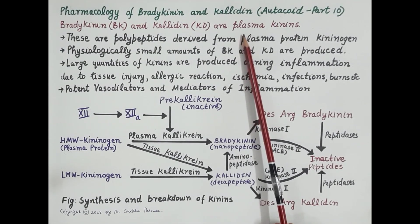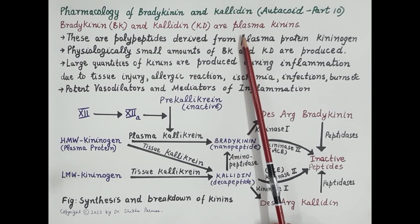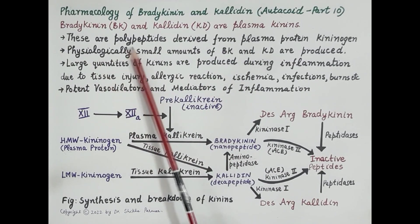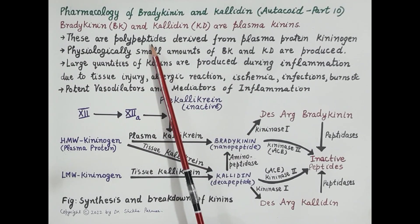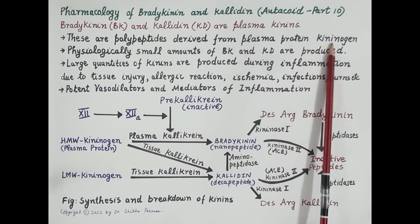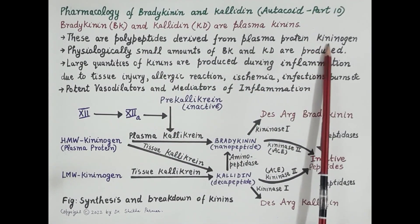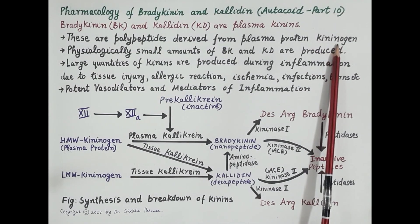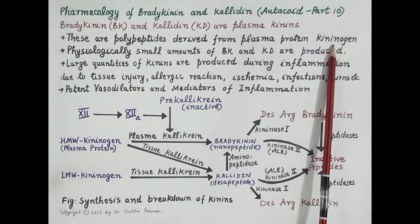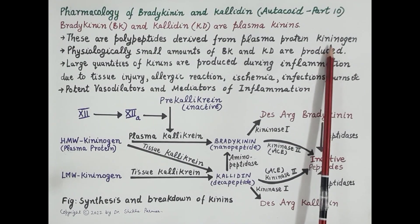These kinins are polypeptides — that is, proteins made up of amino acids. They are derived from a plasma protein known as kininogen, so these kinins are synthesized from a protein called kininogen.